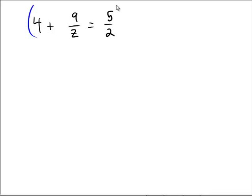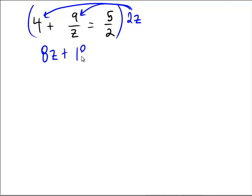And assuming you paused the video and gave it a shot here, well, what would the LCD of the z and the 2 be? That would be 2z. Multiplying through, 4 times 2z is 8z. On the second one, the z's would cancel, leaving us with 9 times 2, which is 18.